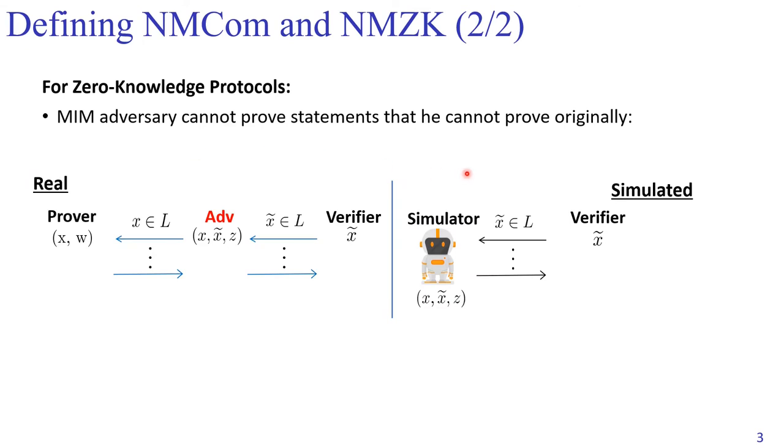Now malleable zero knowledge can be defined in a similar way. We also consider the man-in-the-middle execution, but the man-in-the-middle adversary plays the role of a verifier in the left communication. In the right communication, this adversary plays the role of a potential malicious prover proving some statement to the right honest verifier.